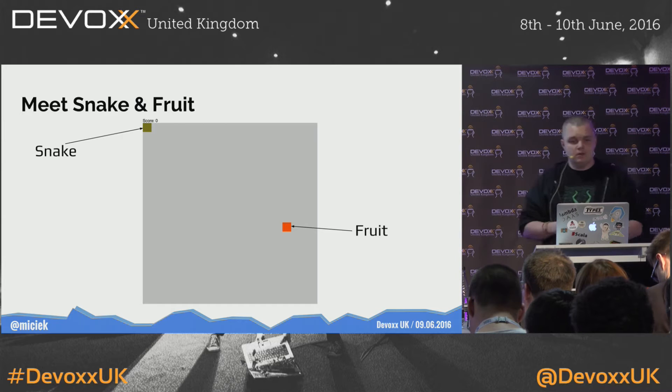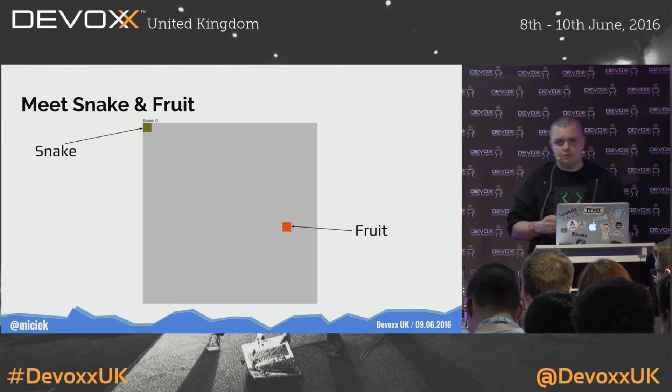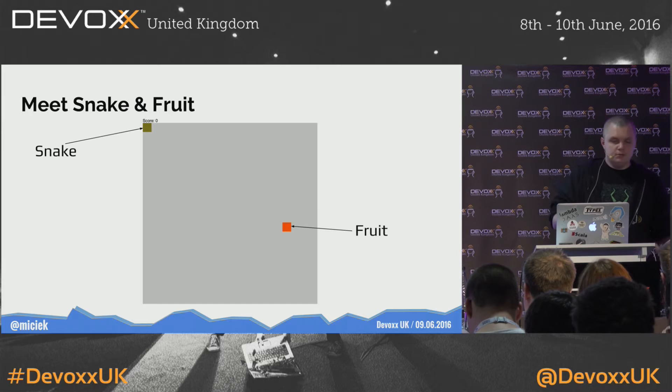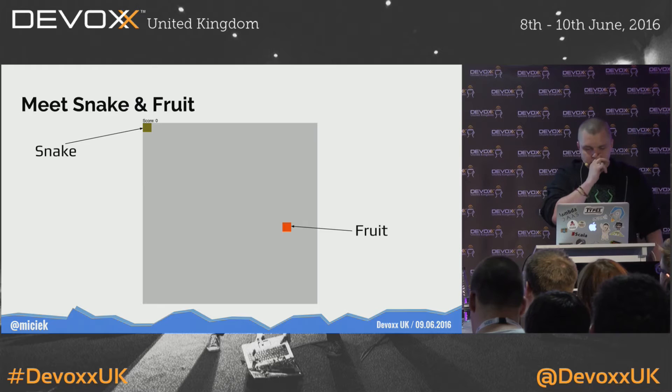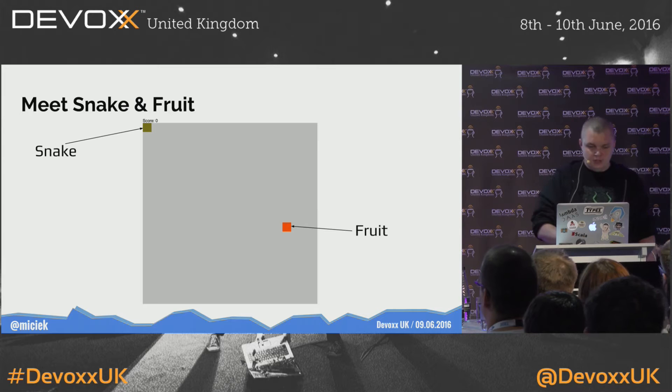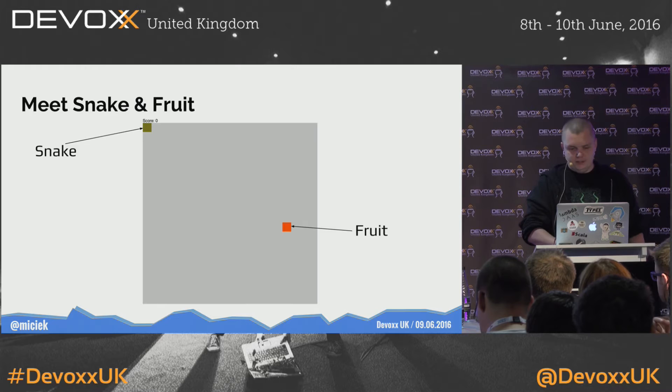The main characters for today: Snake, this green little guy. And the red dot is a fruit. The classical game of snake — the snake eats a fruit, gets bigger, scores points. What will make it more fun is we'll make it multiplayer. And we'll do it from scratch, so all the application logic code will be shown on the slides or in the IDE.